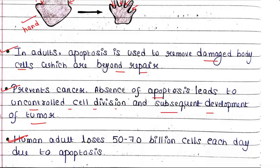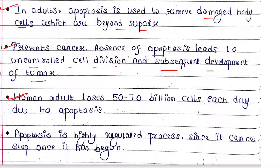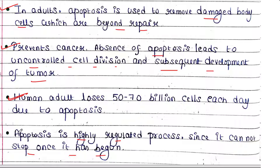Apoptosis is a highly regulated process. It is highly controlled since it cannot be stopped once it has begun — once apoptosis is initiated, we cannot stop it. Hence it is a very highly regulated process.